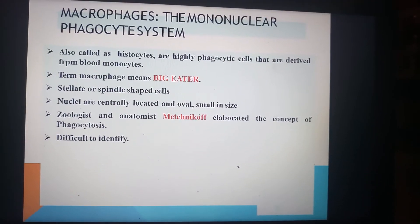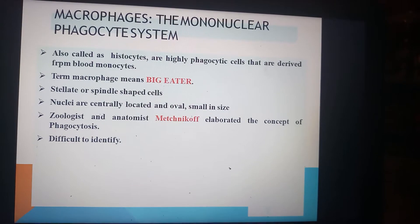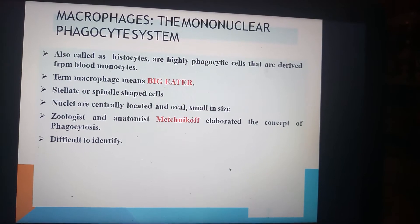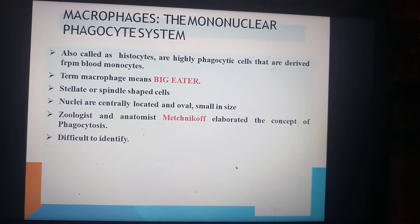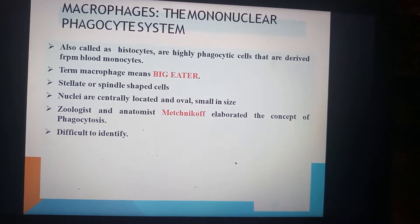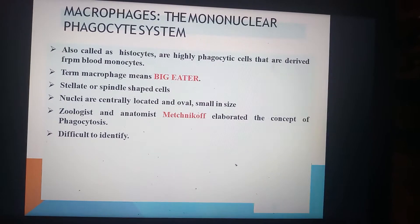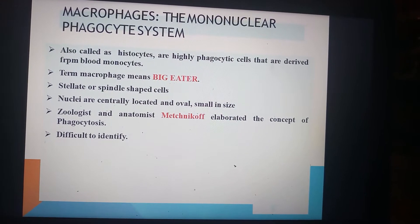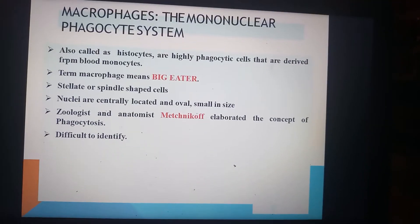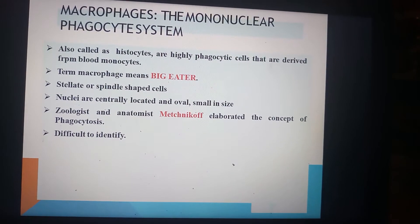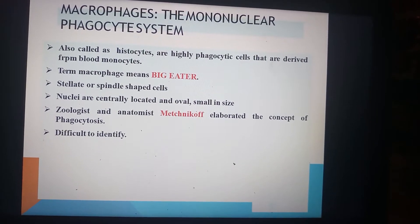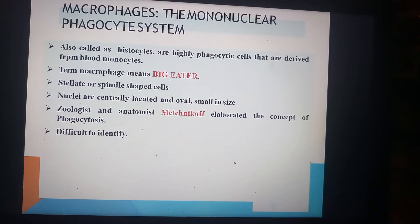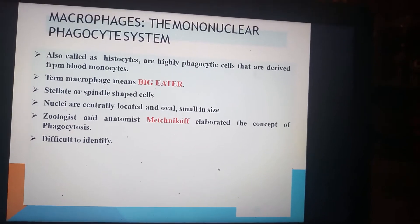The next cells of the connective tissue are the macrophages, which are part of the mononuclear phagocyte system. They are also known as histiocytes and are highly phagocytic cells derived from blood monocytes. The term macrophage means 'big eater,' as they eat debris in the phagocytic system. They are stellate or spindle-shaped cells with nuclei that are centrally located, oval, and small in size. Metchnikoff elaborated the concept of phagocytosis, and macrophages can be difficult to identify.